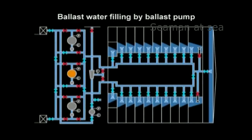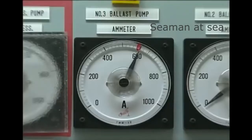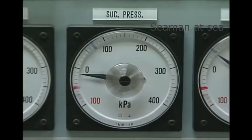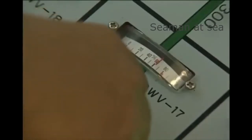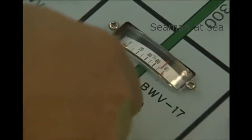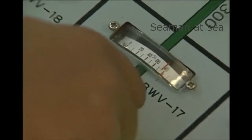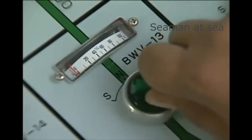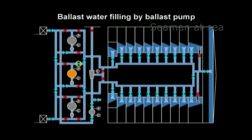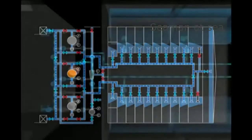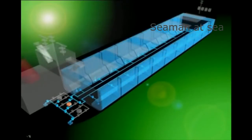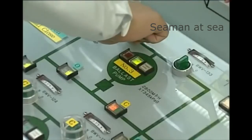Start the ballast pump. After the pump has been started, check the ballast pump electric current value, discharge pressure, and suction pressure. When changing ballast tanks for filling, open the tank's suction valve to be filled next, then close the suction valve attached to the ballast tank that has completed filling. When filling of all tanks has been completed, stop the pumps by closing the ballast pump discharge valves, then close the tank's valves.